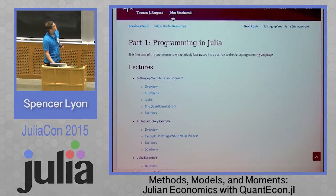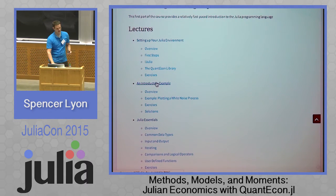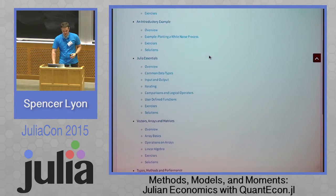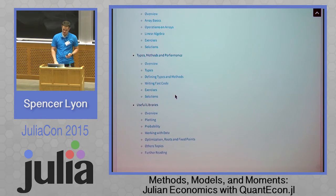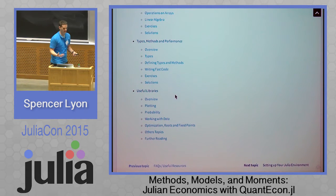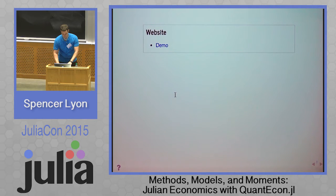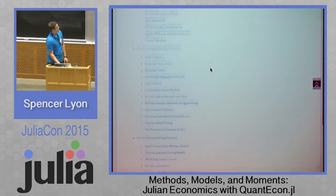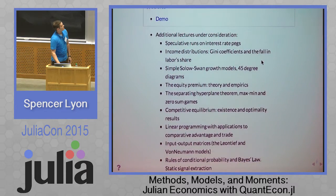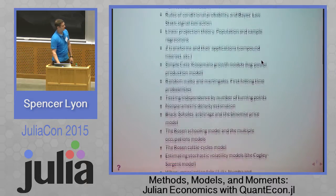The introduction to programming in Julia is fairly extensive. We cover basics starting from step one — how to get everything installed and set up — and show quick examples to motivate people. Then there's an essentials chapter covering data types in Julia, reading data in and out, iterators, functions, types and methods, and multiple dispatch. Finally, we summarize with an overview of the libraries we depend on at QuantEcon. Right now there are between 30 and 40 lectures already on the site, and we have a long list of additional lectures we're considering adding, so we have lots of work ahead.